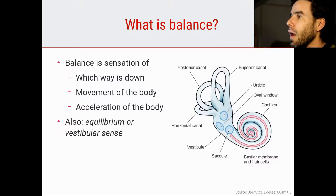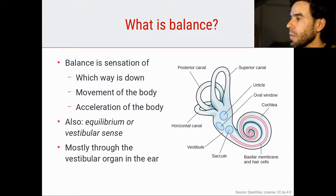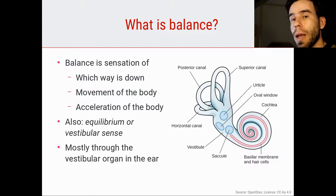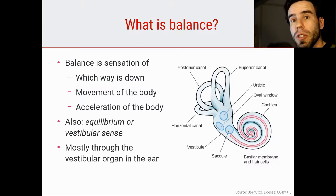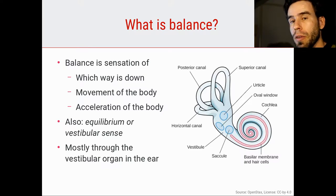By this description you can already tell that balance is kind of a composite sense — it's not really one sense but a combination of senses that all have to do with our sense of balance. Most of our sense of balance happens through the vestibular organ in the ear, which is actually very similar to the inner ear we use for hearing, but functionally does something very different.